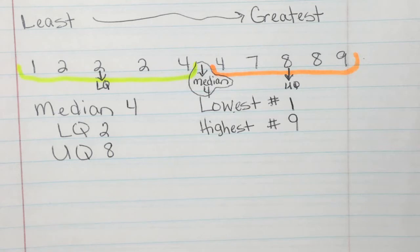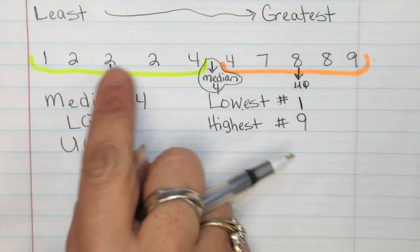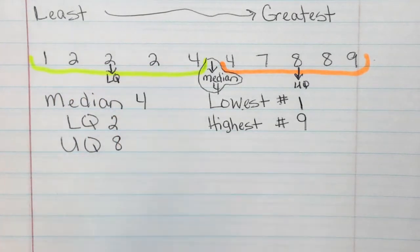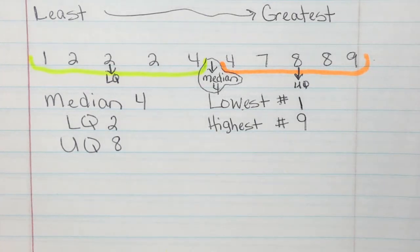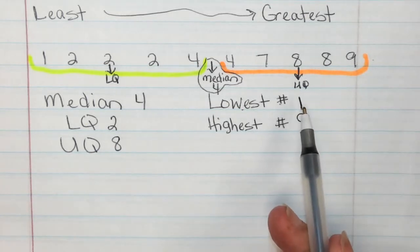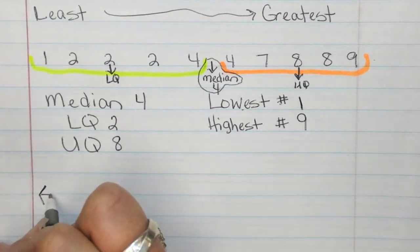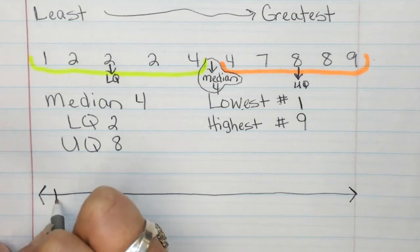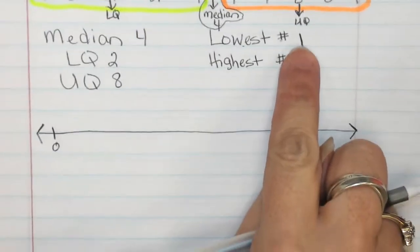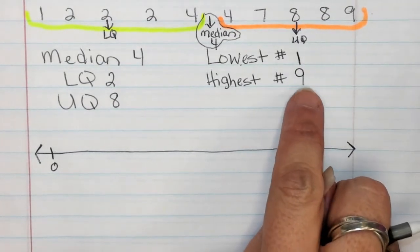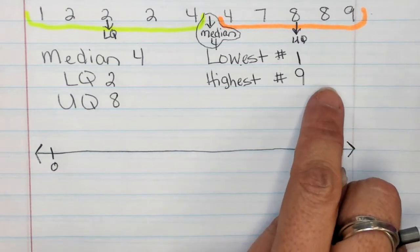Box and whisker plots are created on a number line. Notice the number line on the wall only has one of each number — even though our data has three twos, we don't put three twos on the number line. Our lowest number was one, so we need to go at least one below that when we create our number line. I'm going to start at about zero, and I need it to go about one higher than my highest number — so if my highest is nine, it needs to go to at least ten. Try your best to space them out, and yes, you have to label all the numbers.